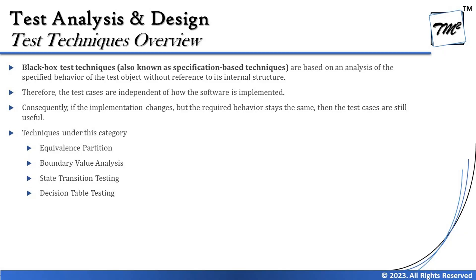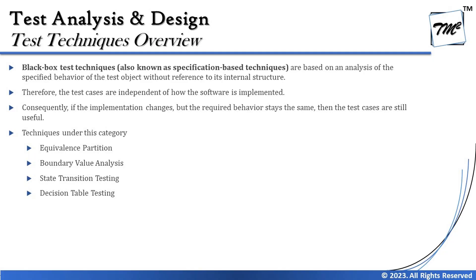Test cases are independent of how the software is implemented because the internal structure is not a dependency. Consequently, if the implementation changes but the required behavior stays the same, the test cases are still useful. As long as the requirement remains the same, no matter if the code changes, the test cases we have written remain valid since they were derived from requirements, not from the code. The four techniques covered here are equivalence partition, boundary value analysis, state transition testing, and decision table testing — all at K3 level, meaning you must apply them during the examination.